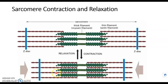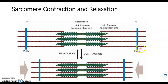The key here is that during contraction versus relaxation, the length of the filaments remains the same. Actin here and here are the same length. Myosin did not change in length, but what did change is more overlap, creating this contraction or a shorter sarcomere.